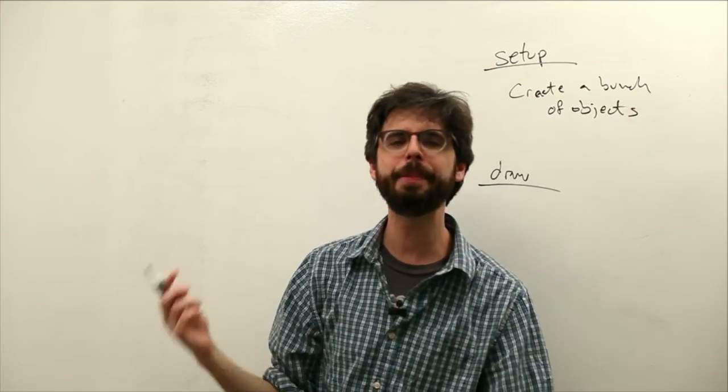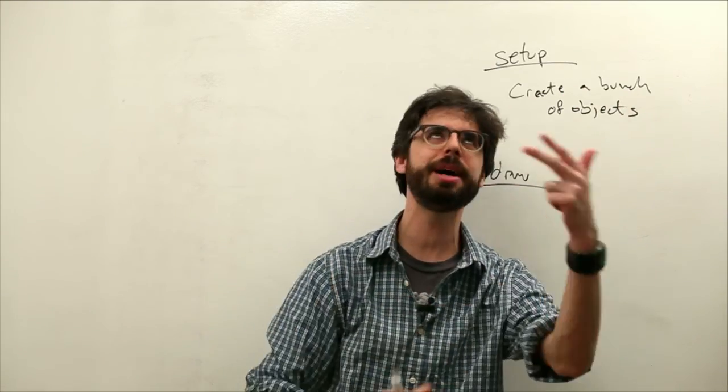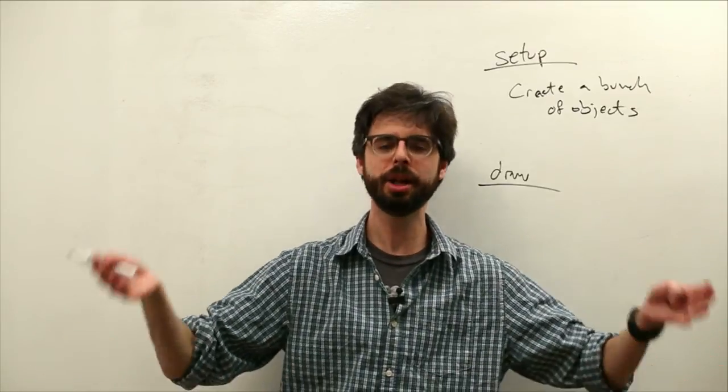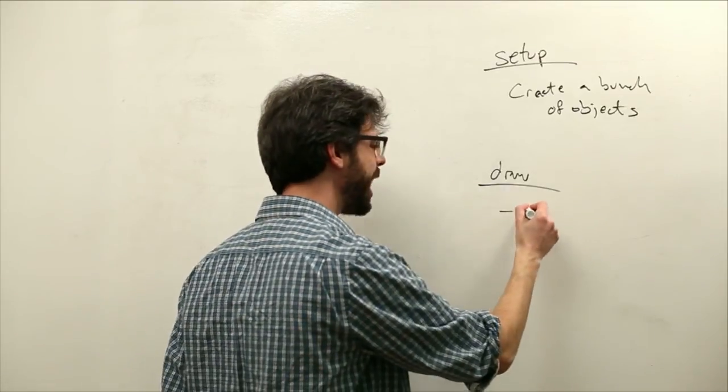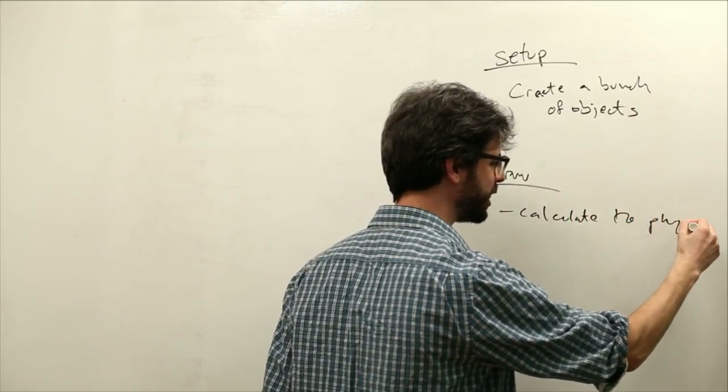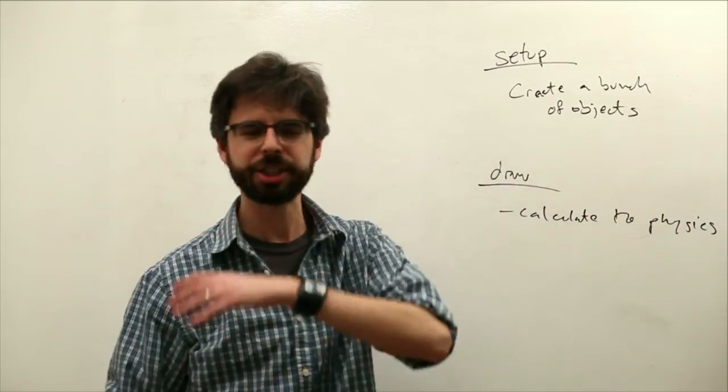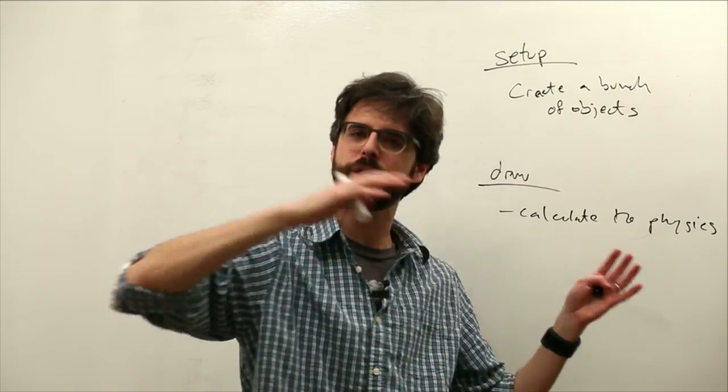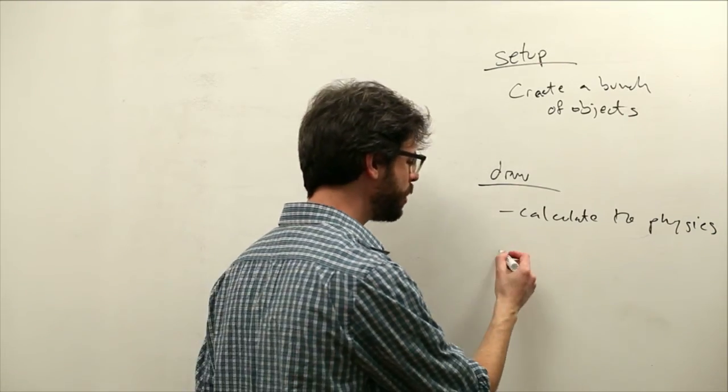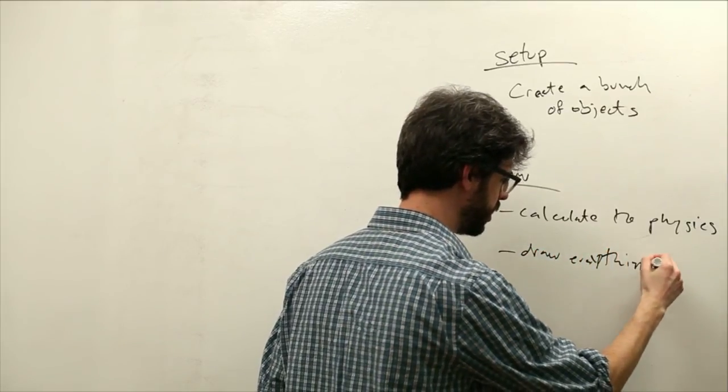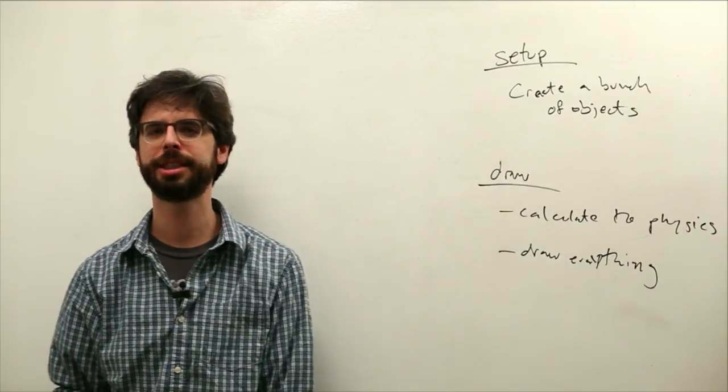And then what happens in draw? Every time the sketch cycles over and over again, we calculate the motion of every object, and then we draw every object. So we calculate, I'll say calculate the physics. You know, location add velocity, velocity add acceleration, apply force, we do all this stuff with everything. And then what do we do? We draw everything. So this is kind of how we've been writing our sketches.